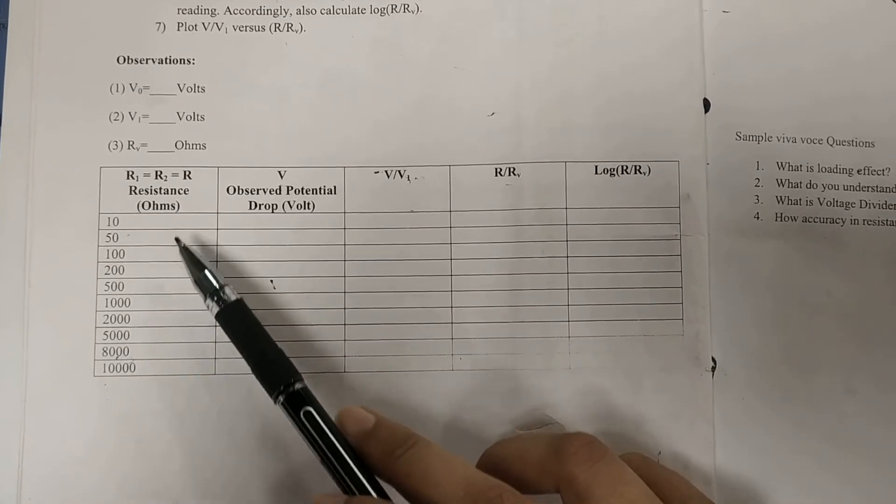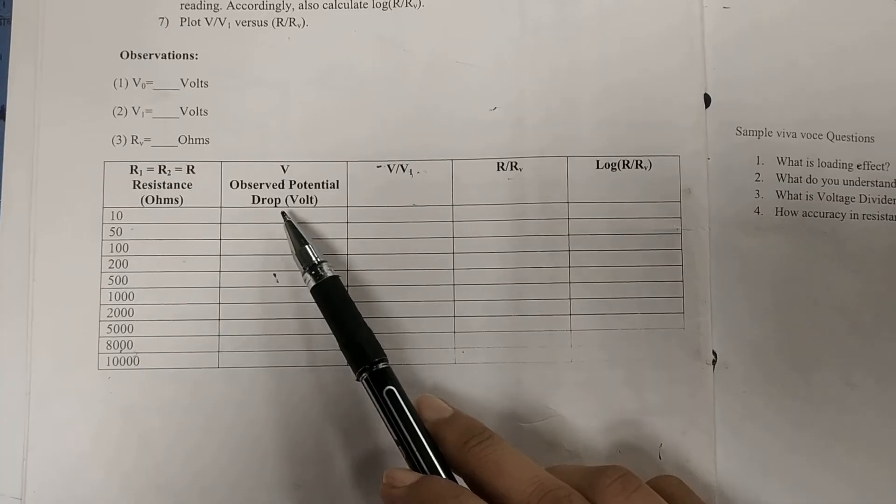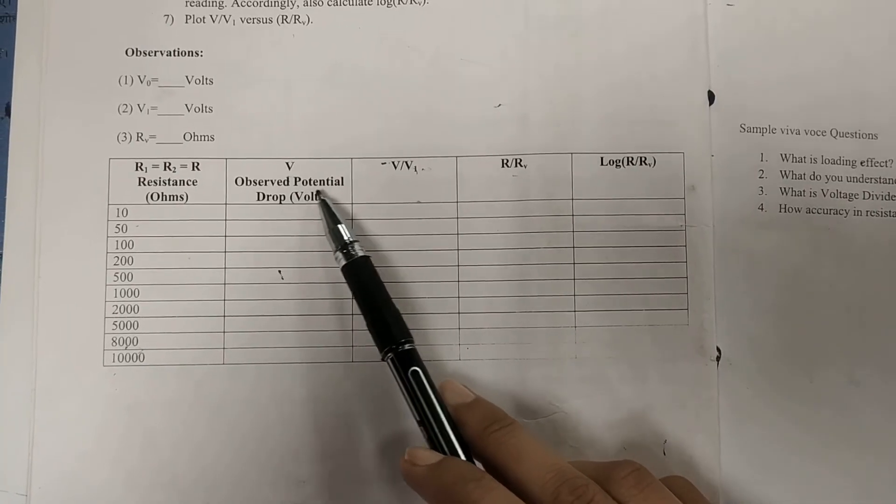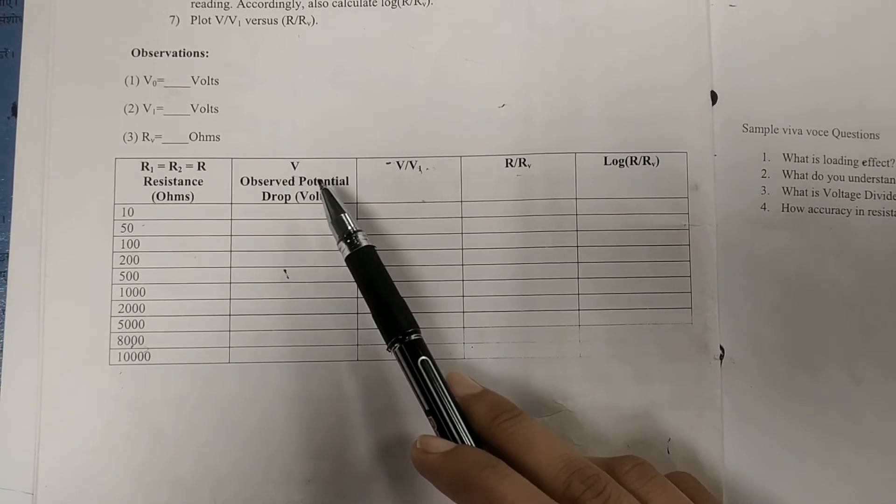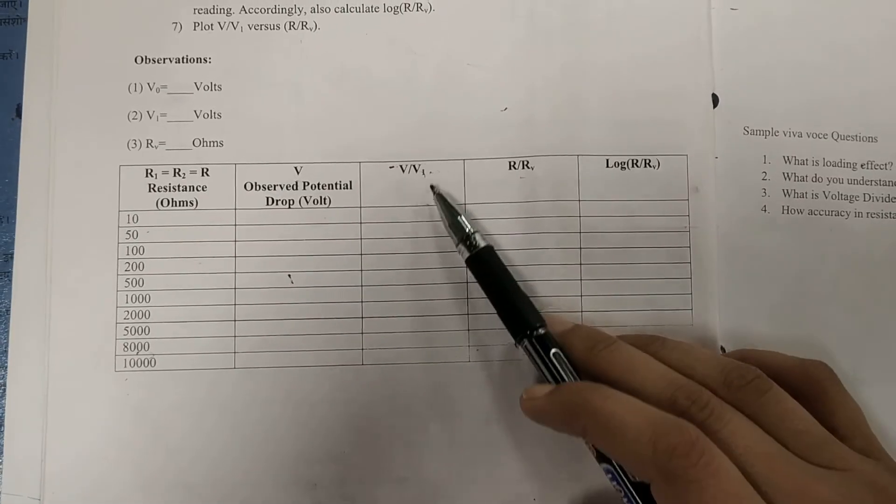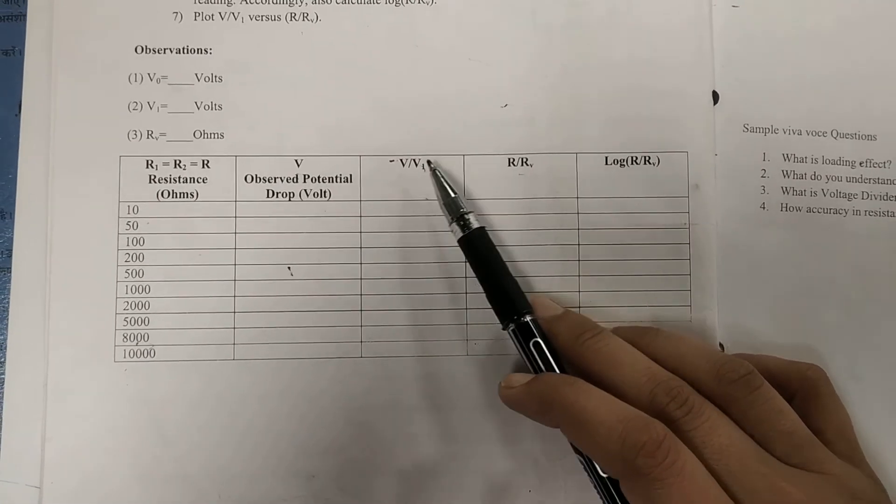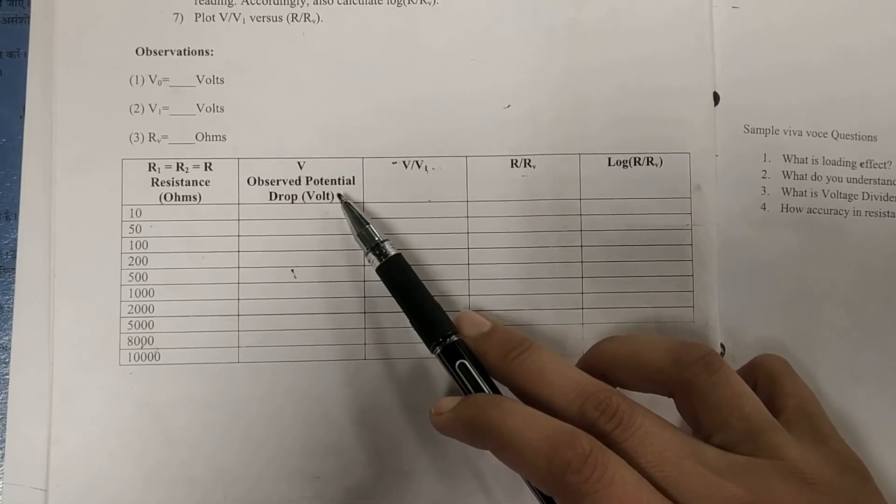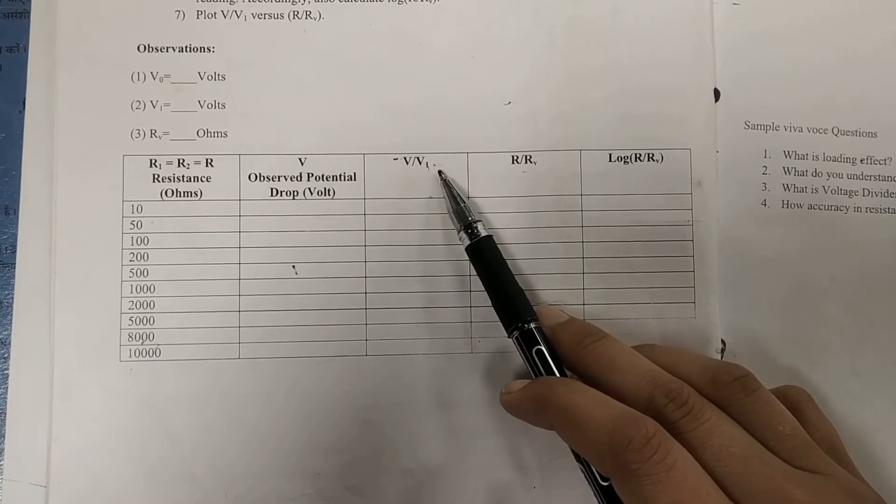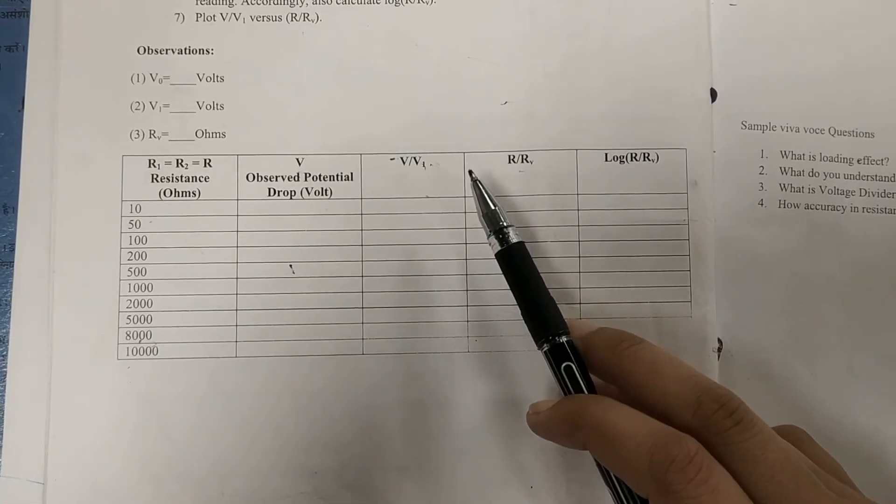Now, corresponding to these resistances, we have measured the observed potential drop across voltmeter. Then, after that, we have to calculate V by V1. Here, V is this observed potential and V1 is our expected potential drop across R1.